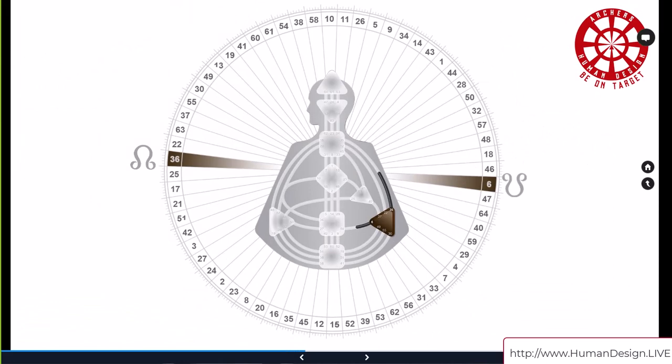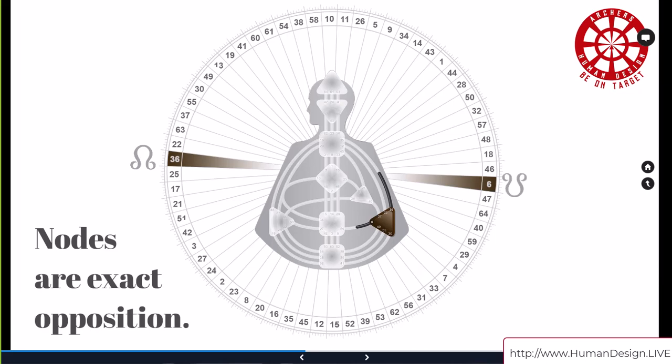When we look at the conscious personality nodal configurations, this is an utterly unique way of seeing each of us. Sometimes we have planets there that would filter. Sometimes we have channels, hanging or dormant potentials, definition. There's all kinds of combinations. Here we have an example, exact opposition. What you're dealing with when you have nodes, just like with the sun and earth, it's an exact opposition. You can say it's a mirror gate across the wheel.